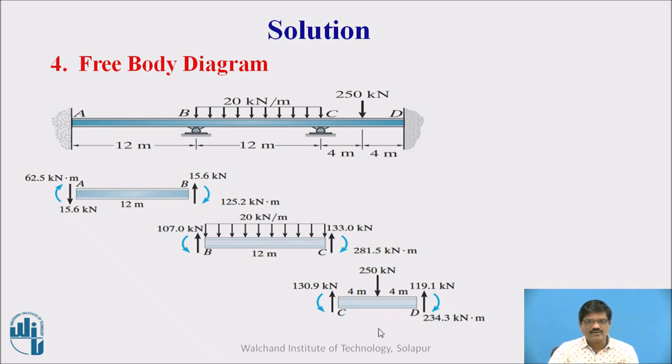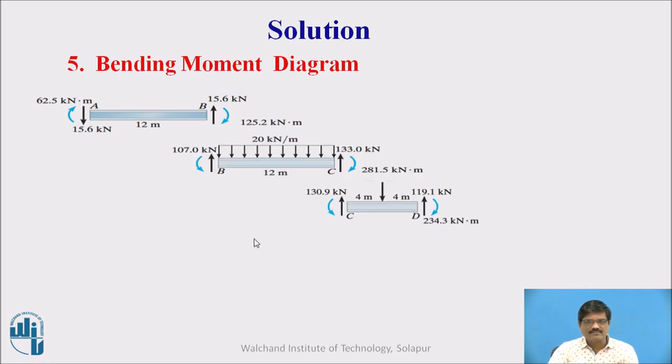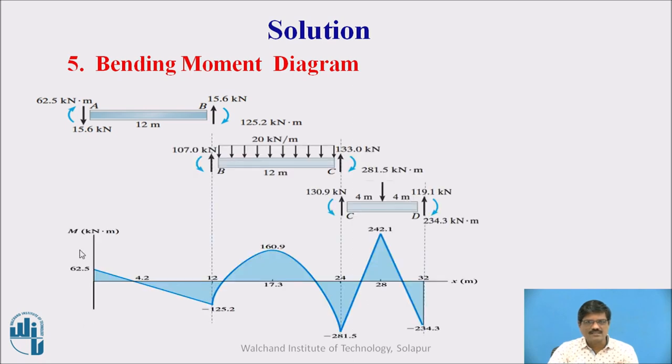And once we get the free body diagram, we can draw the bending moment diagram as well as shear force diagram. So with the help of the free body diagram, this bending moment diagram is constructed. So here it is 62.5. Moment positive is present here. So here it is 125.2 kNm. Since it is hogging it is minus.